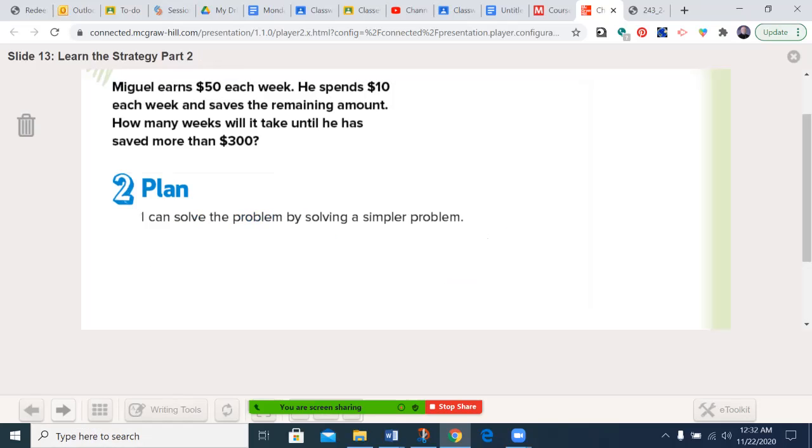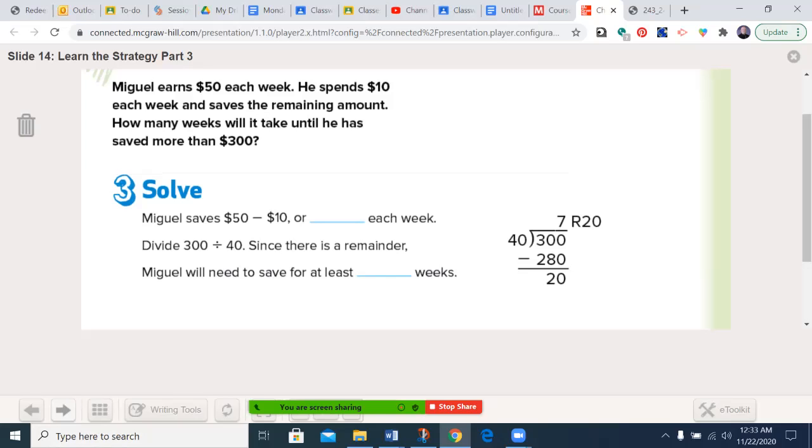In our first problem, Miguel earns $50 each week. He spends $10 each week and saves the remaining amount. How many weeks will it take until he has saved more than $300? So, what facts do we know? We know that he's earning $50 per week, but he's spending $10. And what are we trying to find out? How many weeks will it take until he has saved more than $300? Make sure you're writing these in, as always.